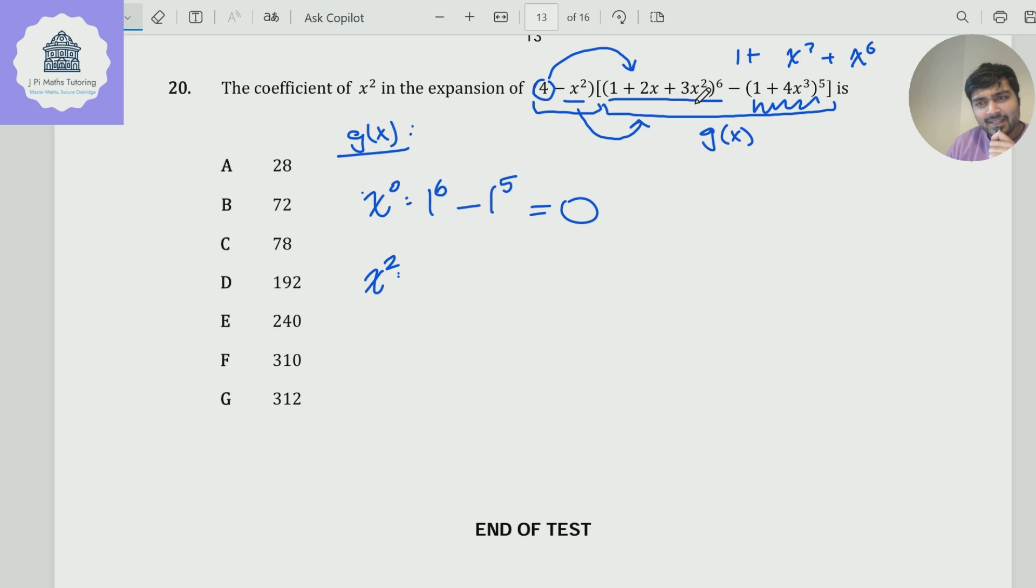So the only way I can get an x² is from this guy here, (1 + 2x + 3x²)⁶. Now what I'm going to do is just actually write this bracket out a few times. So (1 + 2x + 3x²), and so on. And I've got six of these brackets that I'm multiplying together.